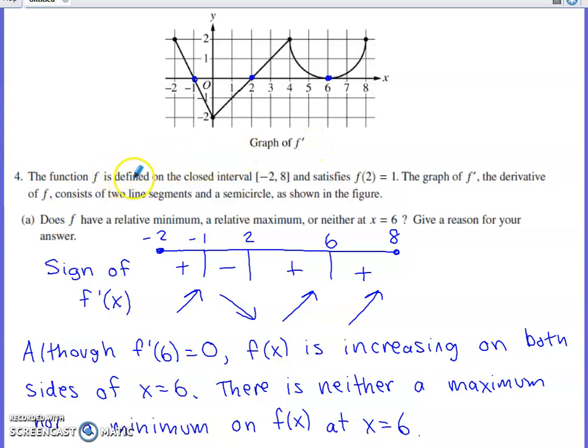We're told that the function f is defined on the interval negative 2 to 8. f of 2 is 1, and then the graph of f prime is given, and it's got two line segments along with this semicircle. Part A says, do we have a relative min, max, or neither at x equals 6 for f? Give a reason for your answer.